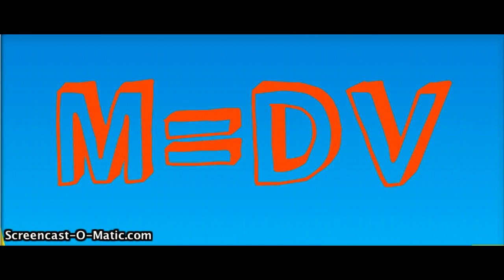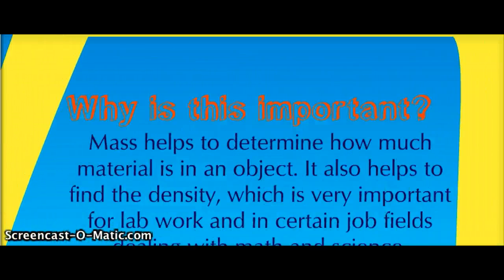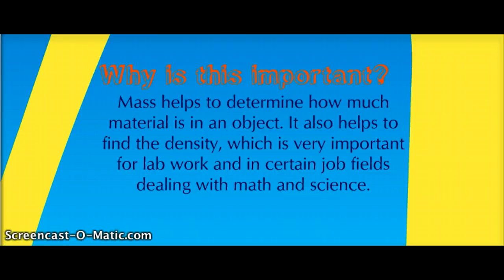Mass equals density times volume. Mass is important because it helps to determine how much material is in an object. It also helps to find the density, which is very important for lab work and in certain job fields dealing with math and science.